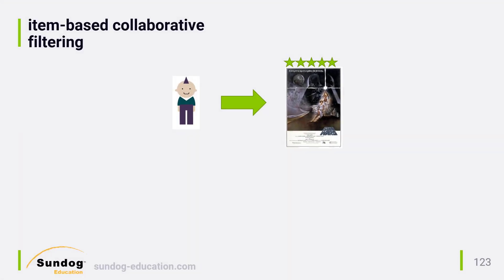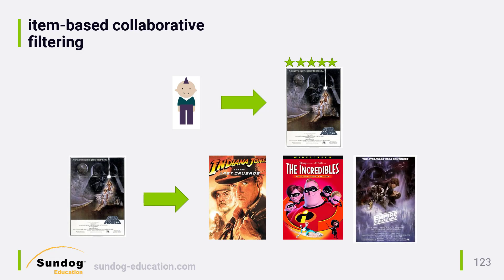So let's go back to our friend Bob. All we know about Bob is that he liked Star Wars — maybe he's a new user and that's the only thing we know about him so far. We can now consult our item-to-item similarity matrix to look up other movies similar to Star Wars based on the ratings of other users who watched Star Wars in the past. Interestingly, this technique not only picks up The Empire Strikes Back, but also picks up Indiana Jones and The Incredibles because Anne liked those too. So even in this tiny example data set, we're getting more interesting results from item-based collaborative filtering than we did with user-based collaborative filtering.